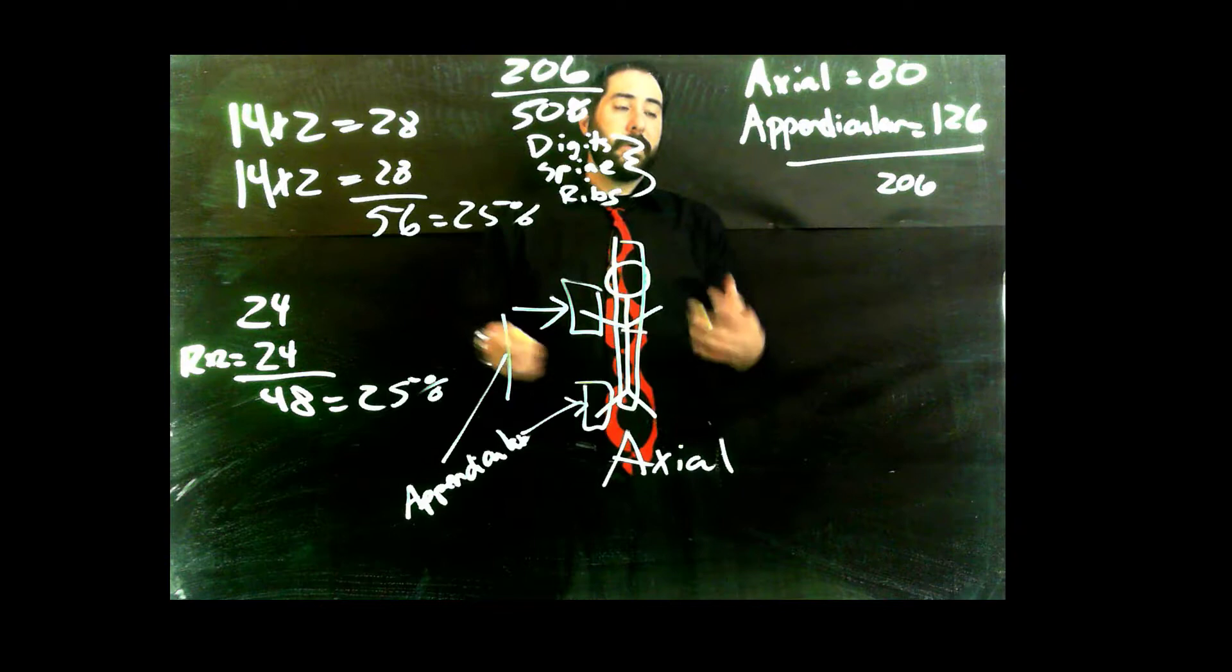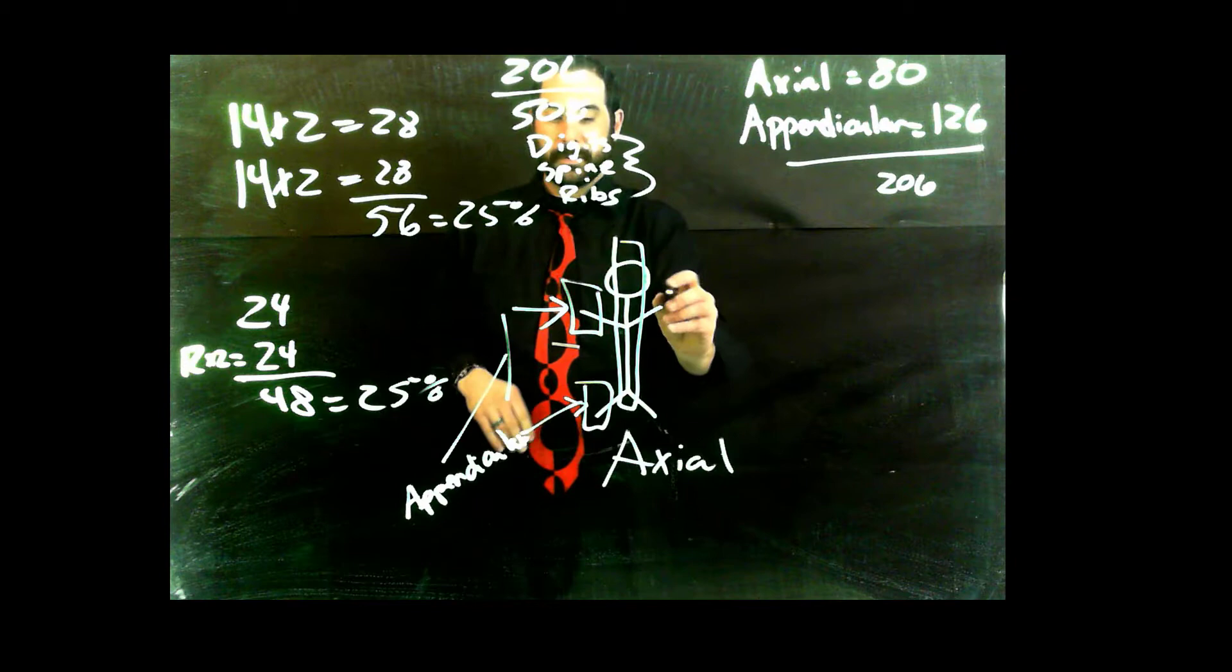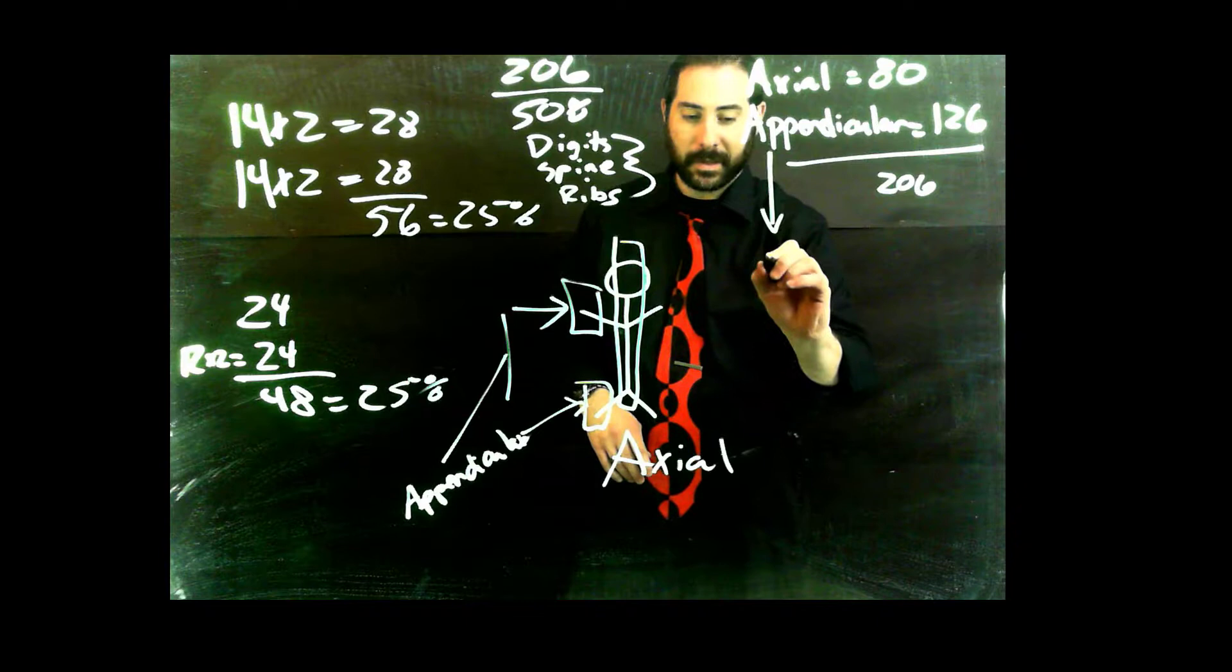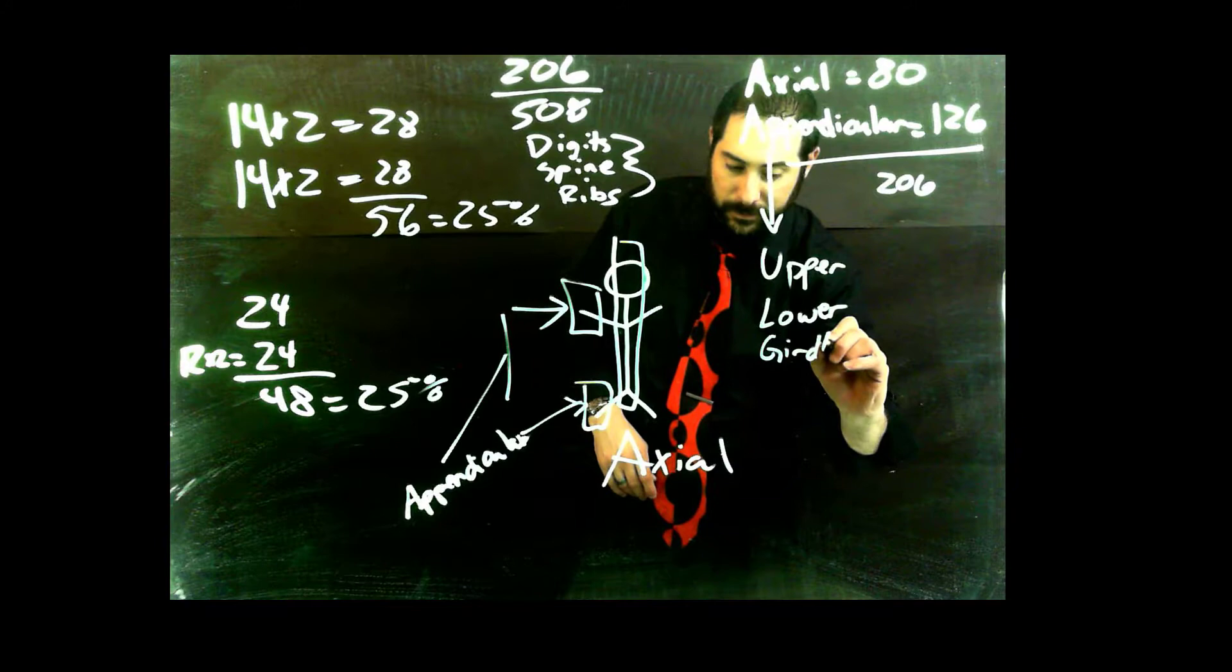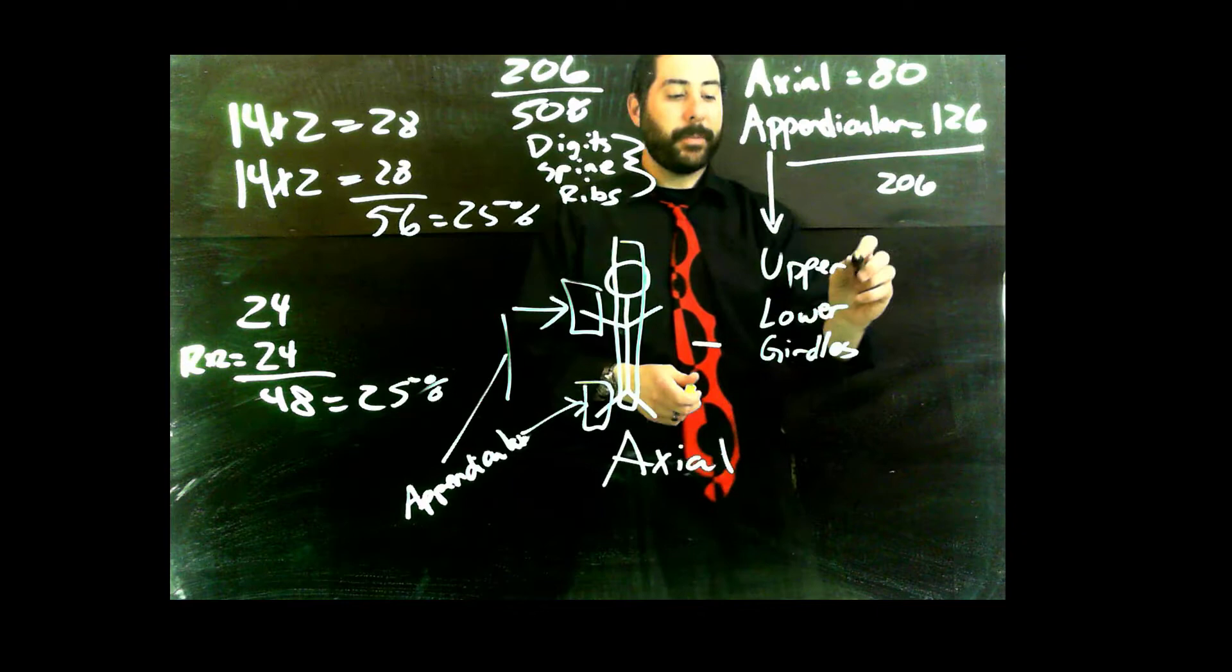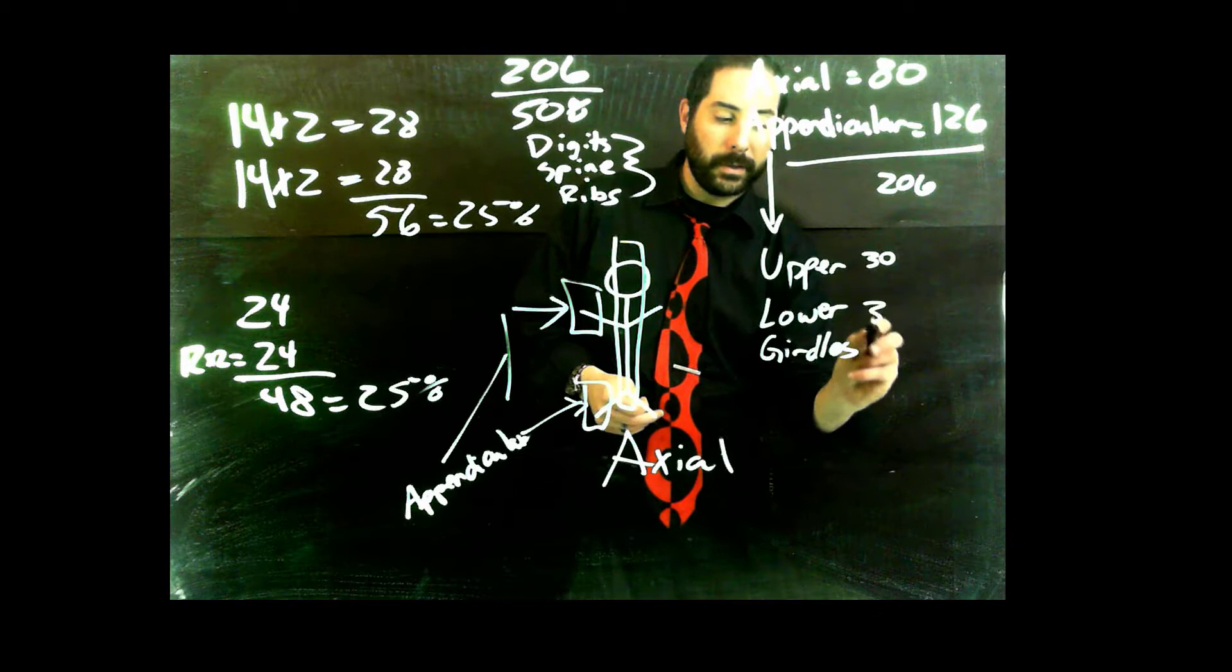The appendicular is a little bit more tricky, but there's a nice catch to that. So our appendicular skeleton is made up of, let's draw a little arrow here, this is our upper extremity, our lower extremity, and then the girdles that hold them on. So the upper extremity has 30 bones in each extremity. The lower has 30 bones in each extremity.